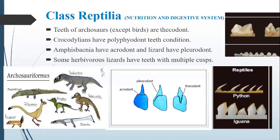Here are the teeth of arcosaurs, and some archosauriform groups like tricodonts. Most of them are not present in the present world, but some birds and reptiles are related to them. These have thecodont teeth. Thecodont teeth are teeth which are fused in a socket of a bone or jaw.